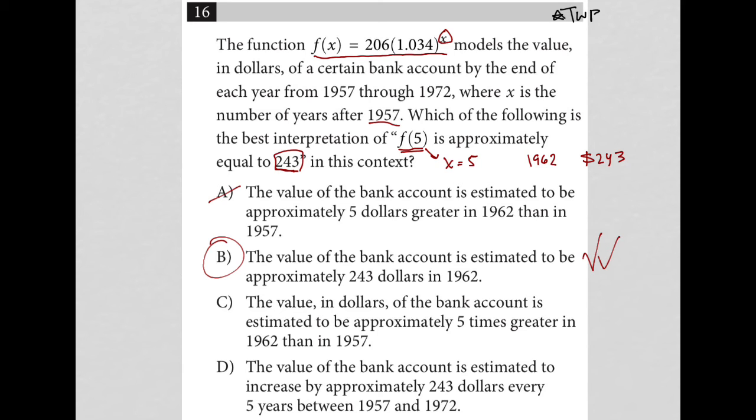Choice C, the value in dollars of the bank account is estimated to be approximately five times greater. Nope, not at all. Five has to do with the number of years after 1957.